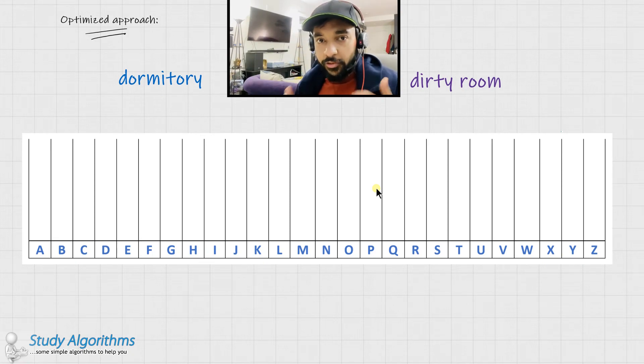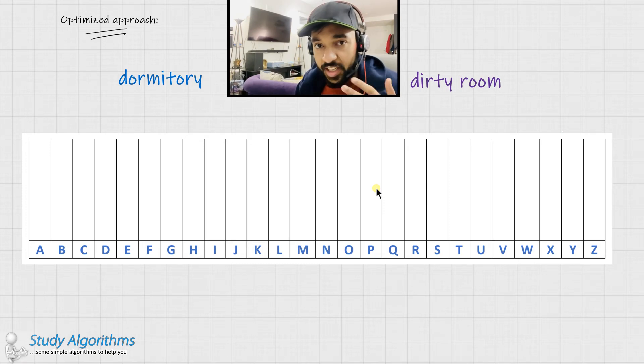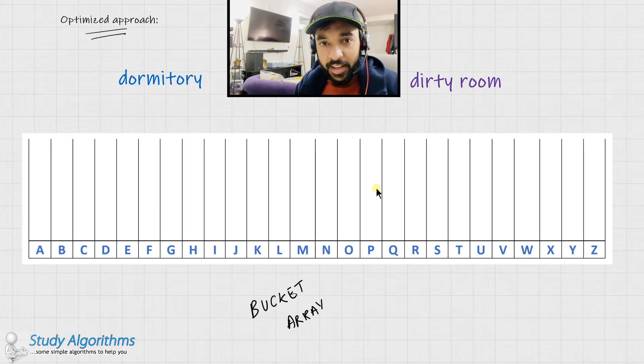In our previous method, we were sorting the strings and hence adding additional time complexities to our solution. But, do we really need to sort? Can we just try to find the solution in just one pass or just two passes of the string? One way to solve this problem would be to create a bucket array. Now this bucket array would consist of all of the characters and their frequencies.